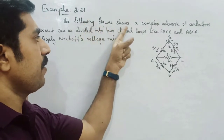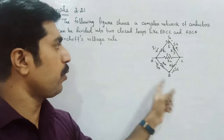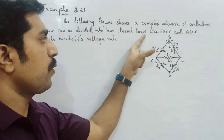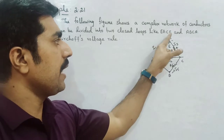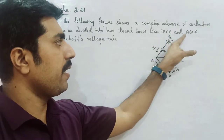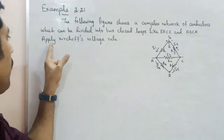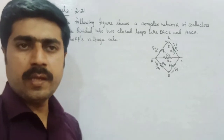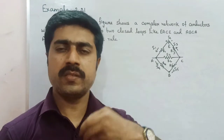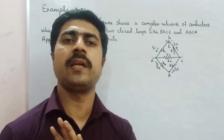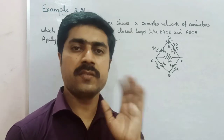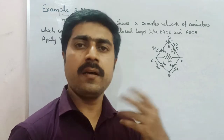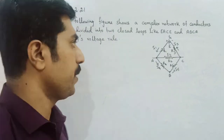The following figure shows a complex network of conductors which can be divided into two closed loops, like EACE and ABCA. We will apply Kirchhoff's Voltage Rule to this complex network of conductors.